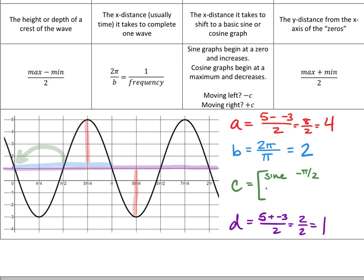If we were writing a cosine version of this graph, cosine wants to start at a maximum and go down. What is the first time that I reach a maximum and then go down? Which is what we're going to subtract away, 3 pi over 4, so that we shift it back to the left. So that's the C value.